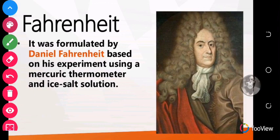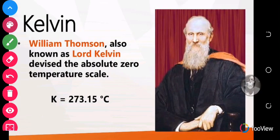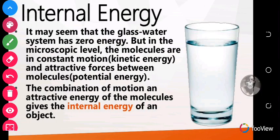Fahrenheit was formulated by Daniel Fahrenheit based on his experiments using a mercuric thermometer and an ice-salt solution. Celsius was invented by Anders Celsius using pure water. Kelvin was discovered by William Thompson, also known as Lord Kelvin, who devised the absolute zero temperature. The symbol for Kelvin is a capital K.